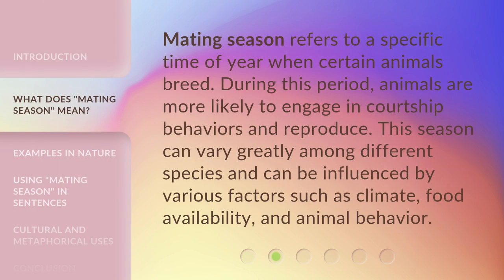Mating season refers to a specific time of year when certain animals breed. During this period, animals are more likely to engage in courtship behaviors and reproduce. This season can vary greatly among different species and can be influenced by various factors such as climate, food availability, and animal behavior.